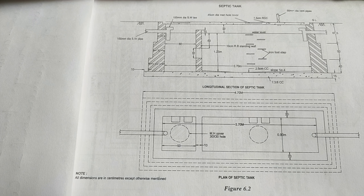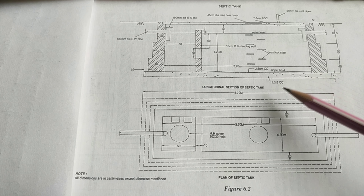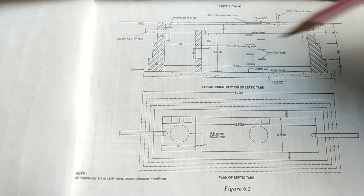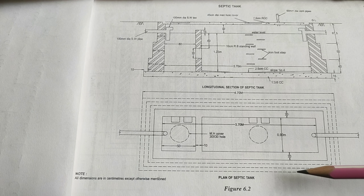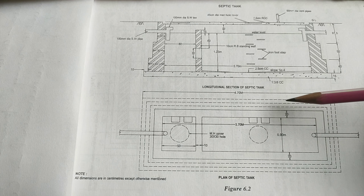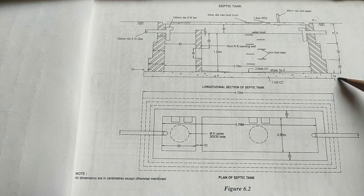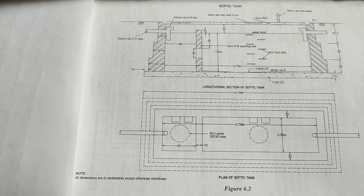The second item is the CC foundation in 1:3:6 mix. The length remains 4.7m and breadth remains 1.9m. The depth of PCC is 15cm, i.e., 0.15 meters. So for CC foundation: number 1, length 4.7, breadth 1.9, depth 0.15. Multiply all four columns to get the quantity of foundation.